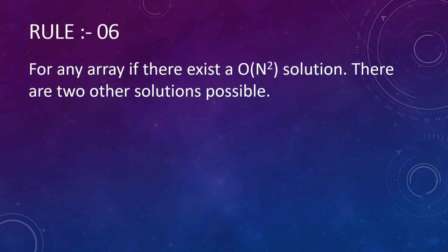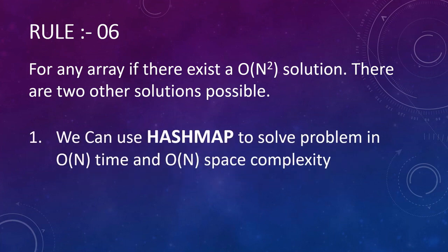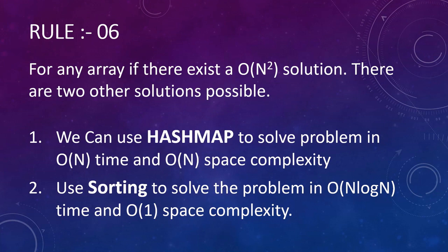Rule number six: whenever we are given an input array and we come up with a solution that runs in O(n²) time, there are two better alternatives. First, we can use a hash map to solve the problem in O(n) time and O(n) space complexity. Second, if we use sorting on the given input, we can solve it in O(n log n) time and O(1) space. If your interviewer wants better time complexity, use a hash map; if they want no extra space, use sorting.